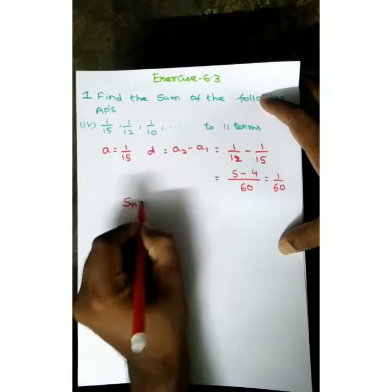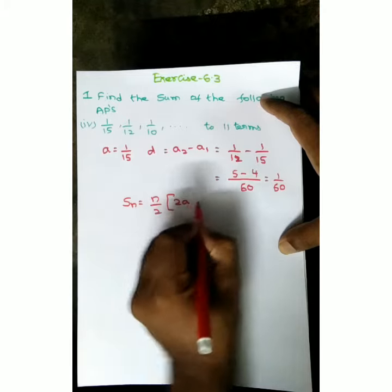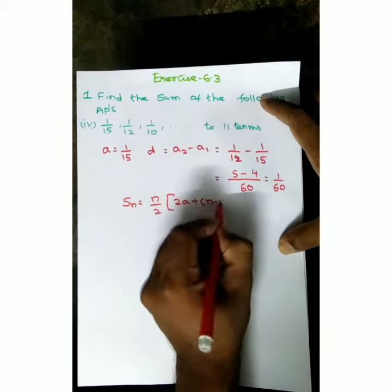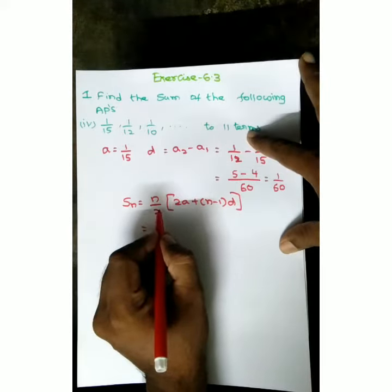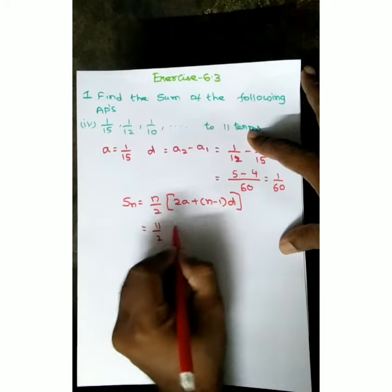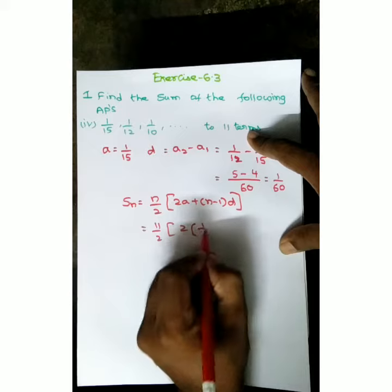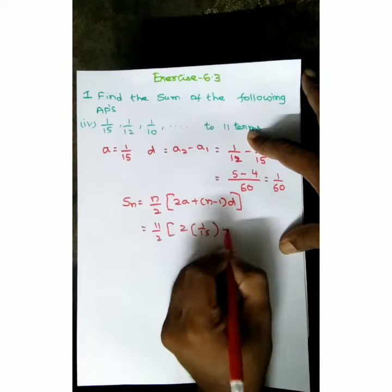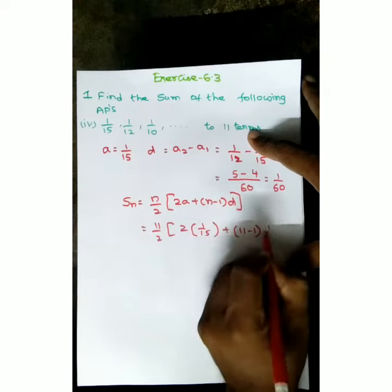SN formula: SN is equal to n by 2 into 2A plus n minus 1 into D. Sum to 11 terms, so n is equal to 11. 11 by 2 into 2 into A value 1 by 15 plus 11 minus 1 into D value 1 by 60.